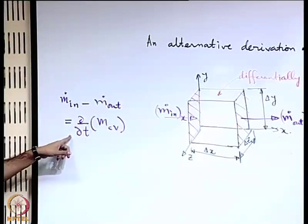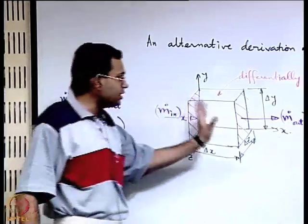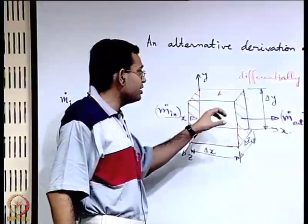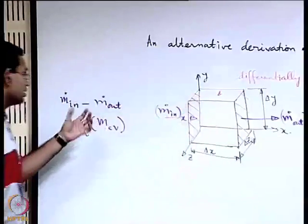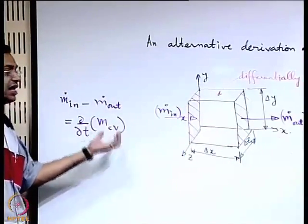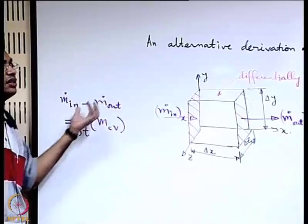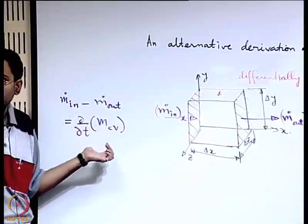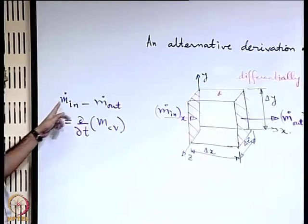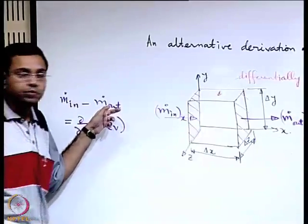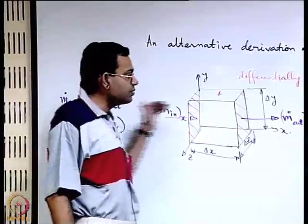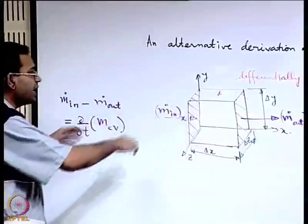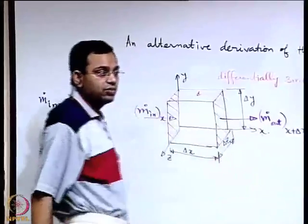We use a partial derivative here because by specifying the control volume at fixed coordinates, we are freezing its location with respect to position and looking at what happens at that frozen position with respect to time — hence a partial derivative with respect to time. The m-dot in minus m-dot out has contributions from flow along x, y, and z. We write what happens along x; similar expressions follow for y and z.